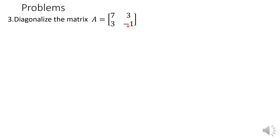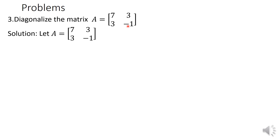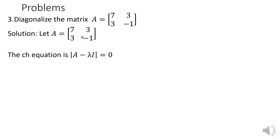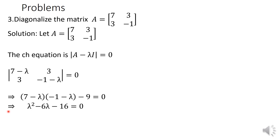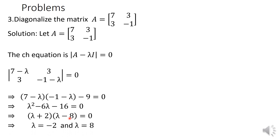You know the procedure already. First find out the eigenvalues using the characteristic equation. On expanding, we get lambda squared minus 6 lambda minus 16 equals 0. Factorizing this gives (lambda + 2)(lambda - 8) = 0, so the eigenvalues are minus 2 and 8.